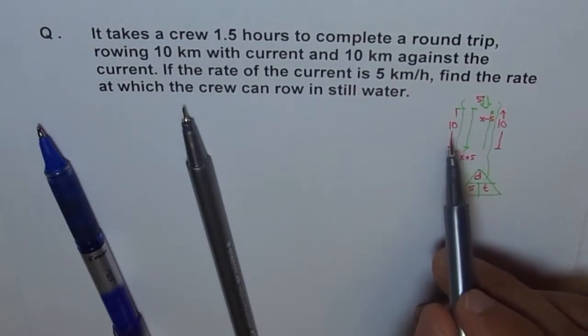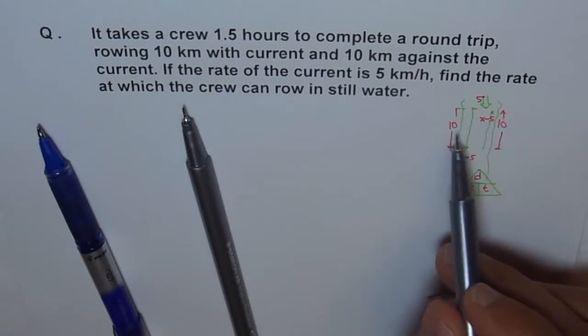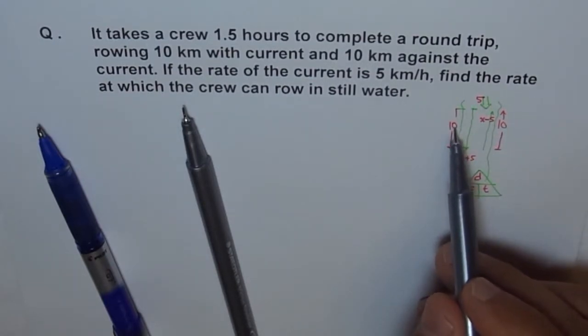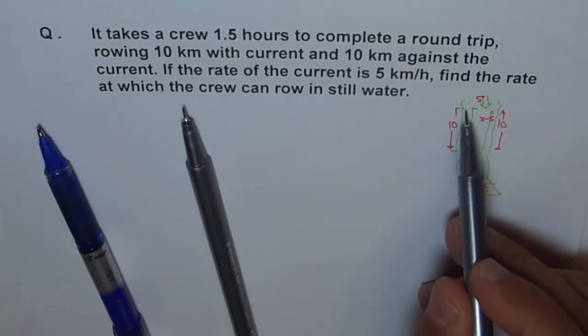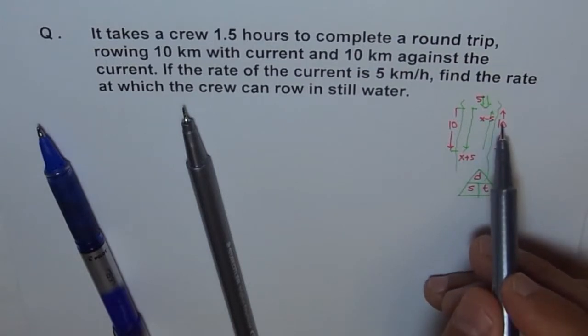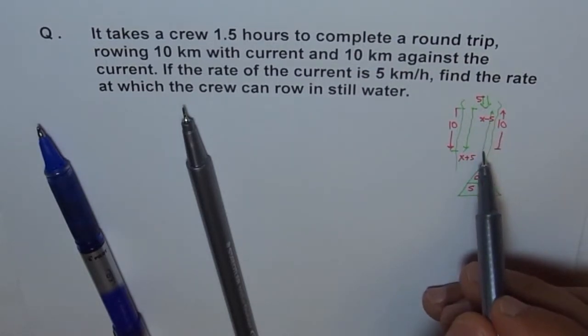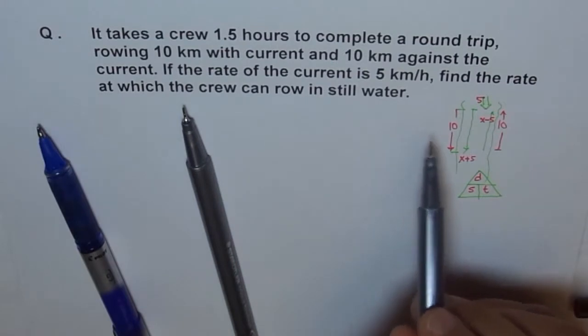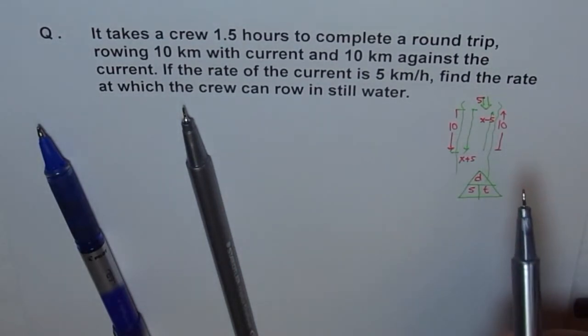Now, so that becomes the speed part. And now, what is time? Time is distance divided by speed. And distance in both ways is 10 kilometers and 10 kilometers. So, you get 10 kilometers over X plus 5 is the time to go downstream. And 10 kilometers over X minus 5 is the time to go upstream, correct?